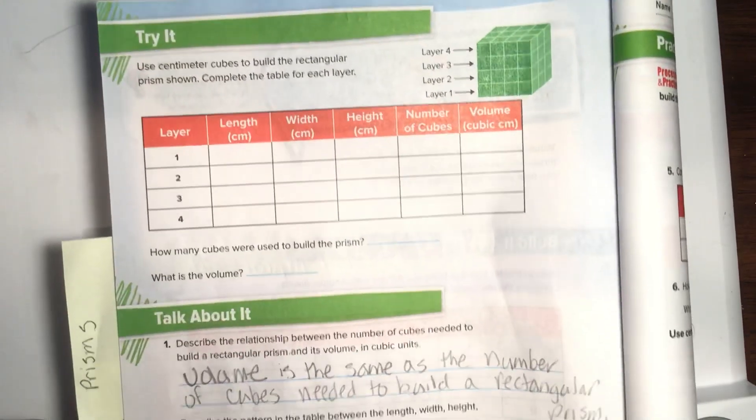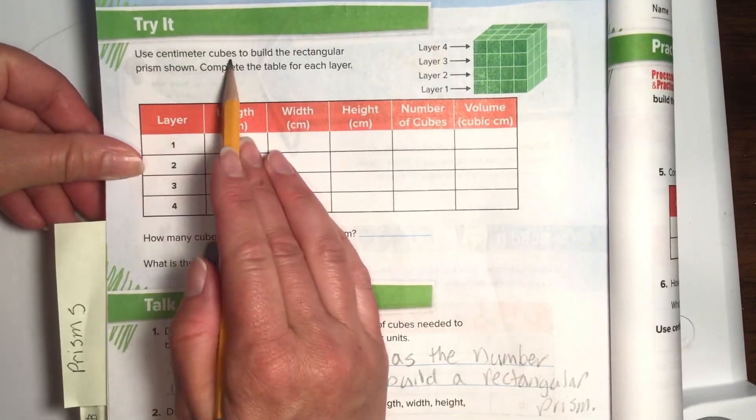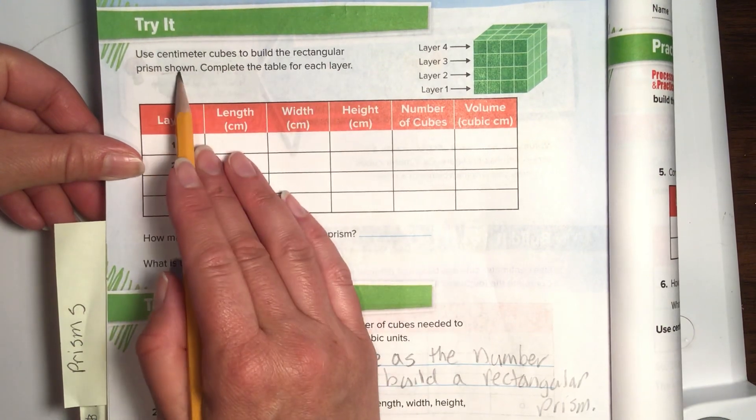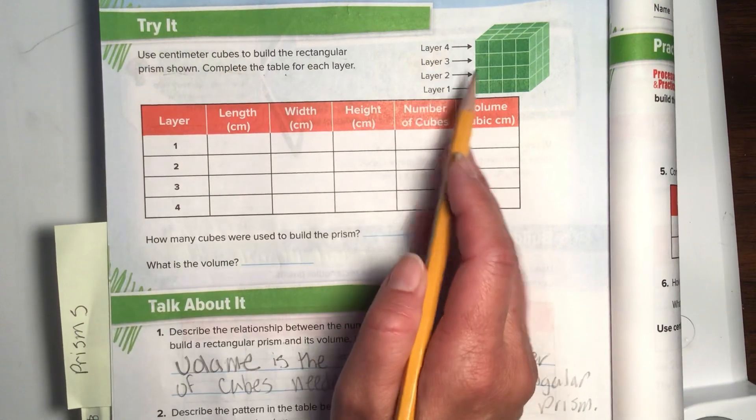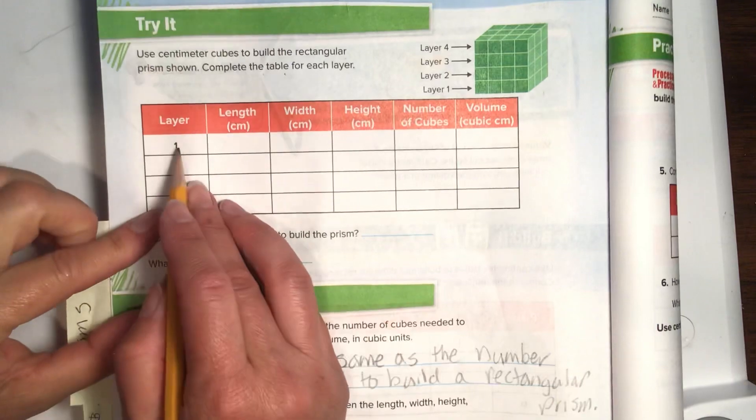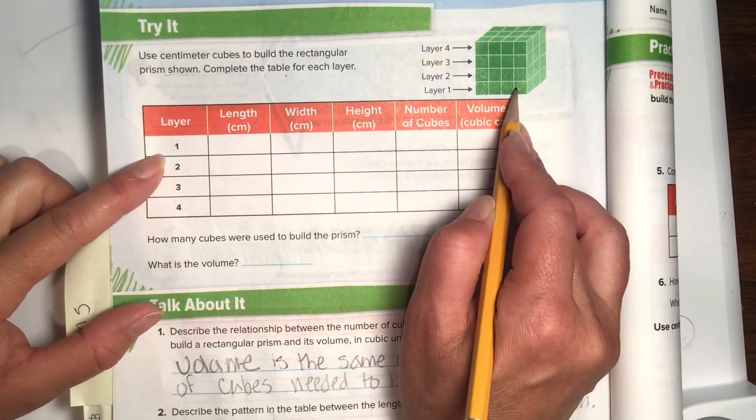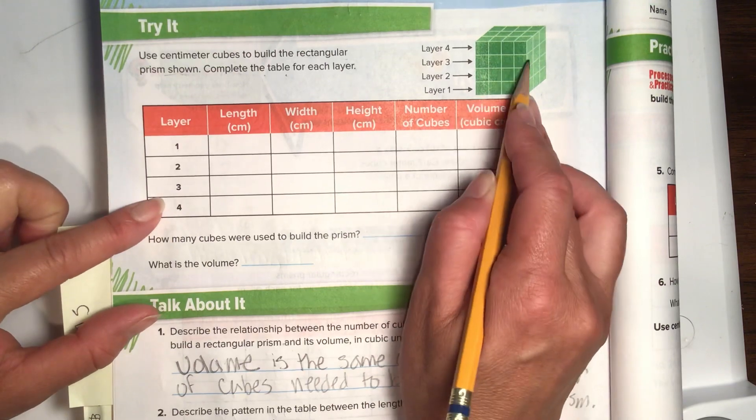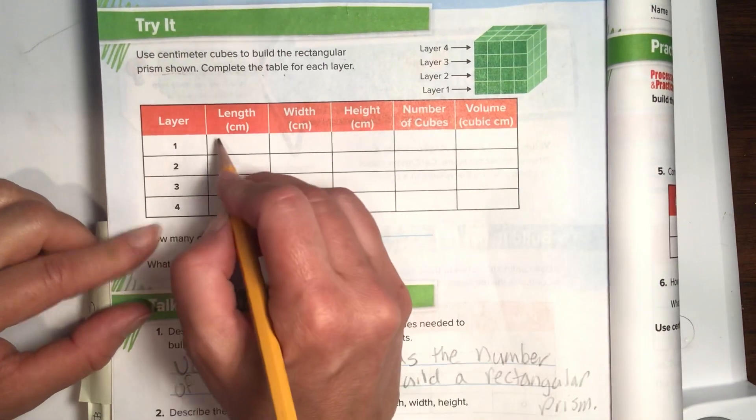Let's dive into this one right here. Use centimeter cubes to build the rectangular prism shown. Complete each table for each layer. We are building this thing right here. We have layer 1, and so we're just talking about this layer. Layer 2, Layer 3, Layer 4. Alright, let's talk about it.